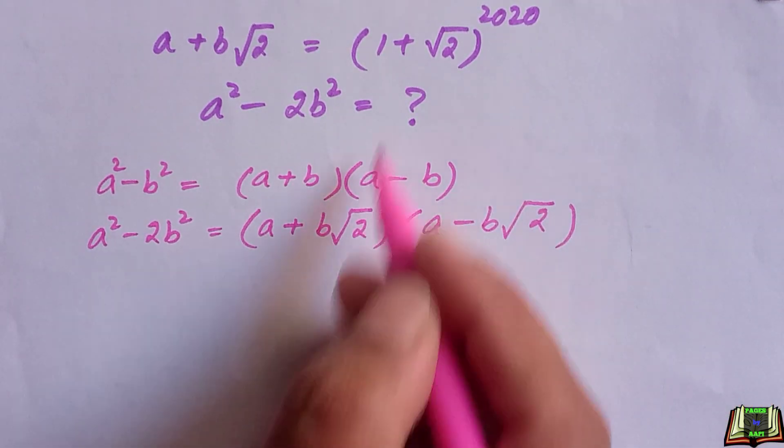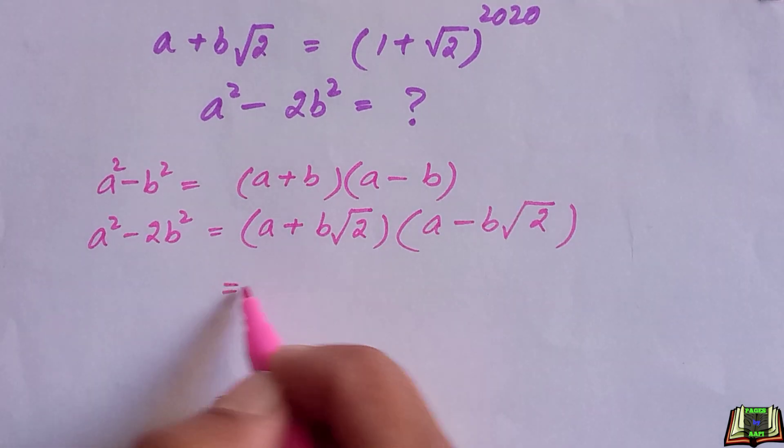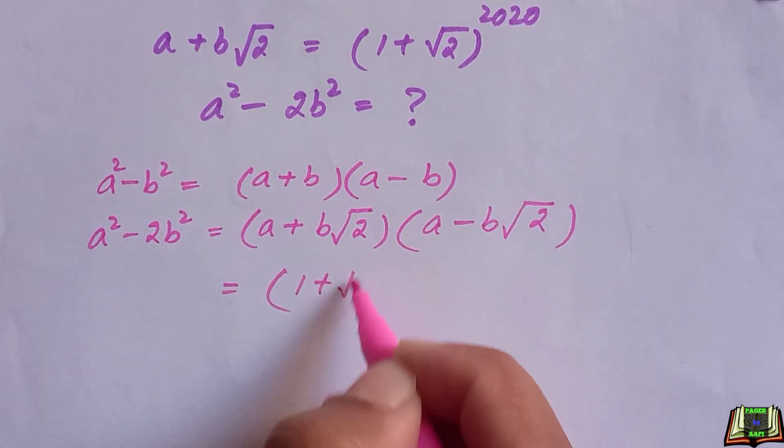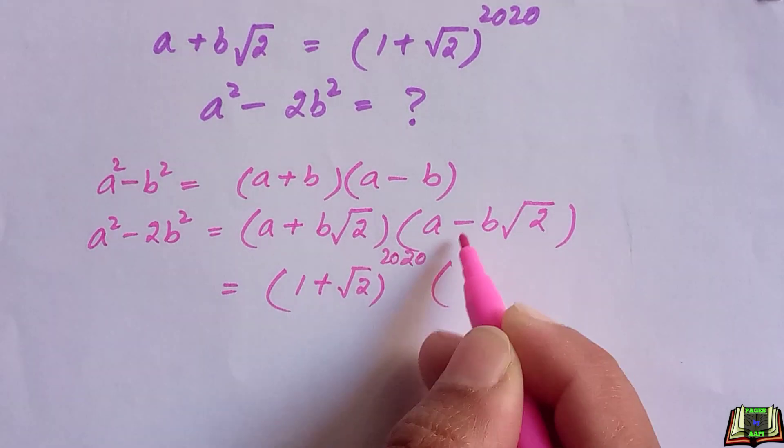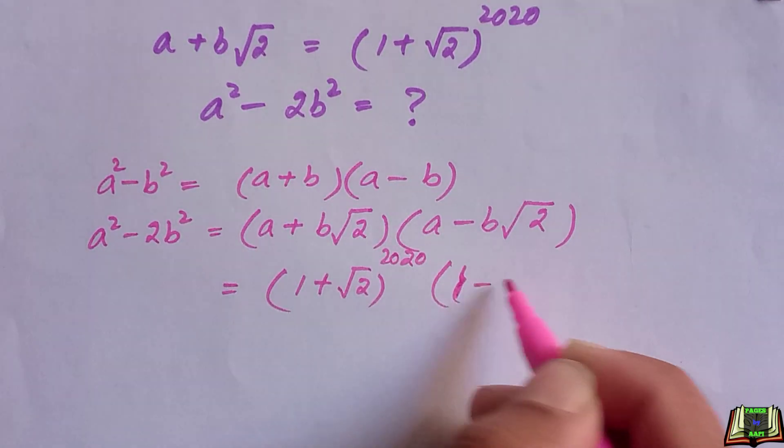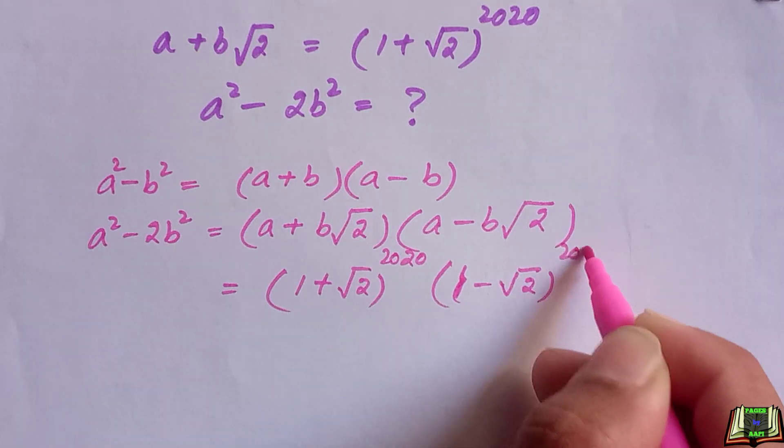We know the value of a + b√2 is equal to (1 + √2)^2020. Similarly, a - b√2 will be (1 - √2)^2020.